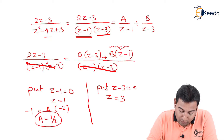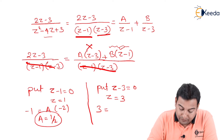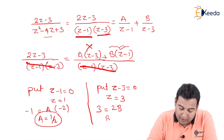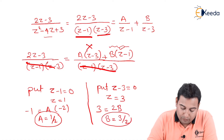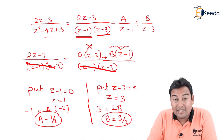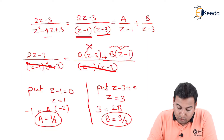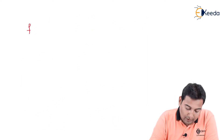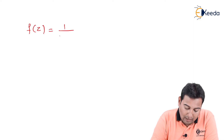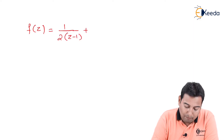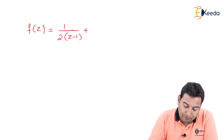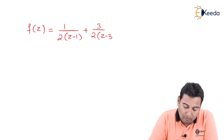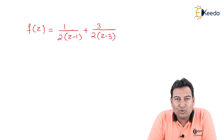Similarly, put z equal to three. The A term cancels; three minus one is two, so we get 2B, giving B equal to three by two. So we have A equal to one half and B equal to three by two. Therefore f(z) equals (1/2) upon (z minus one) plus (3/2) upon (z minus three).